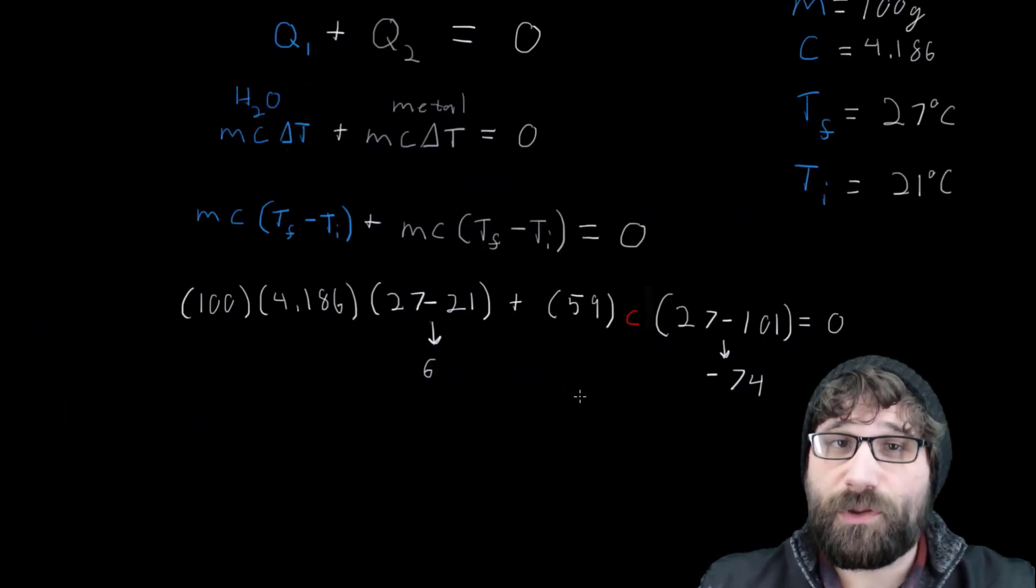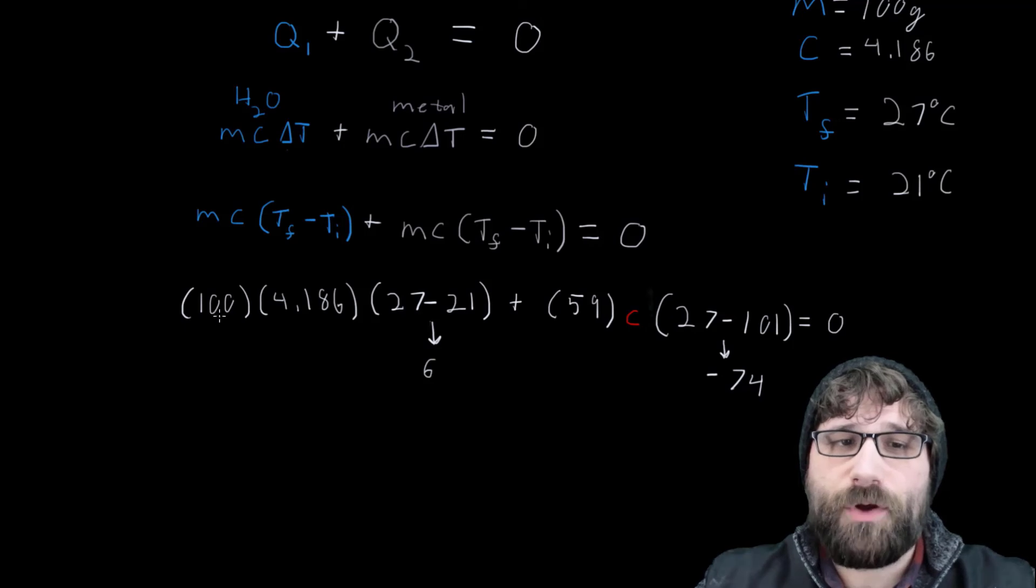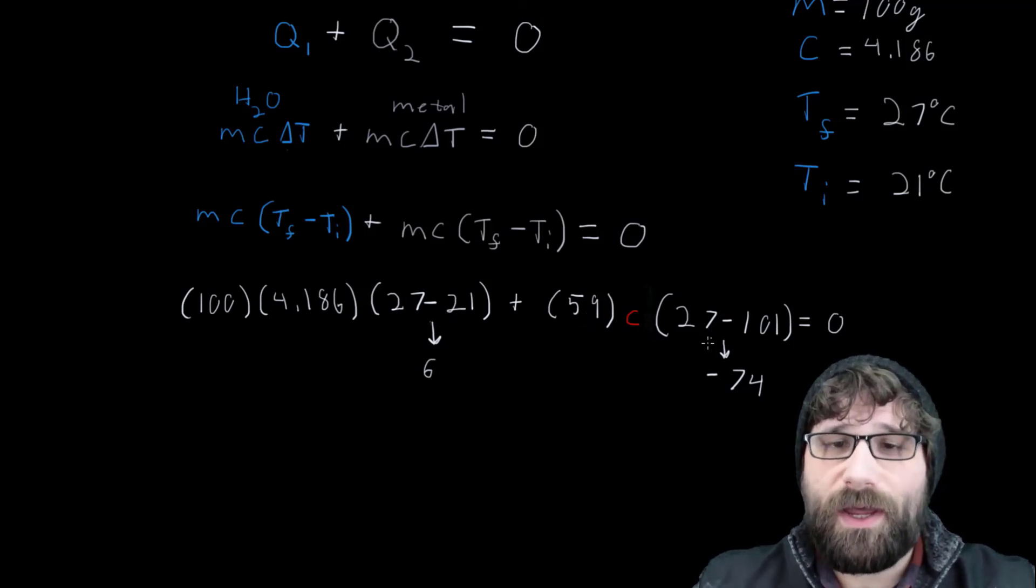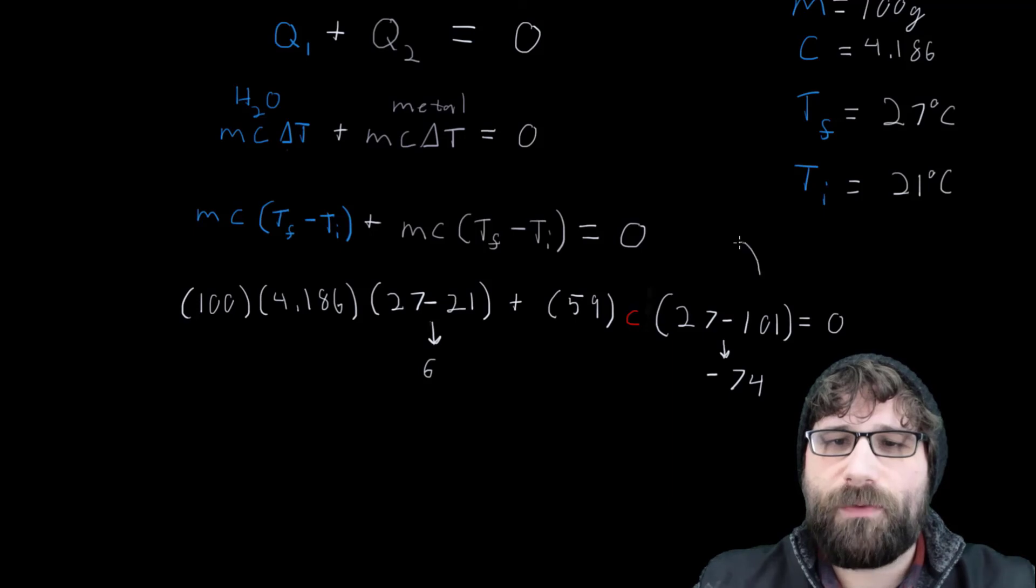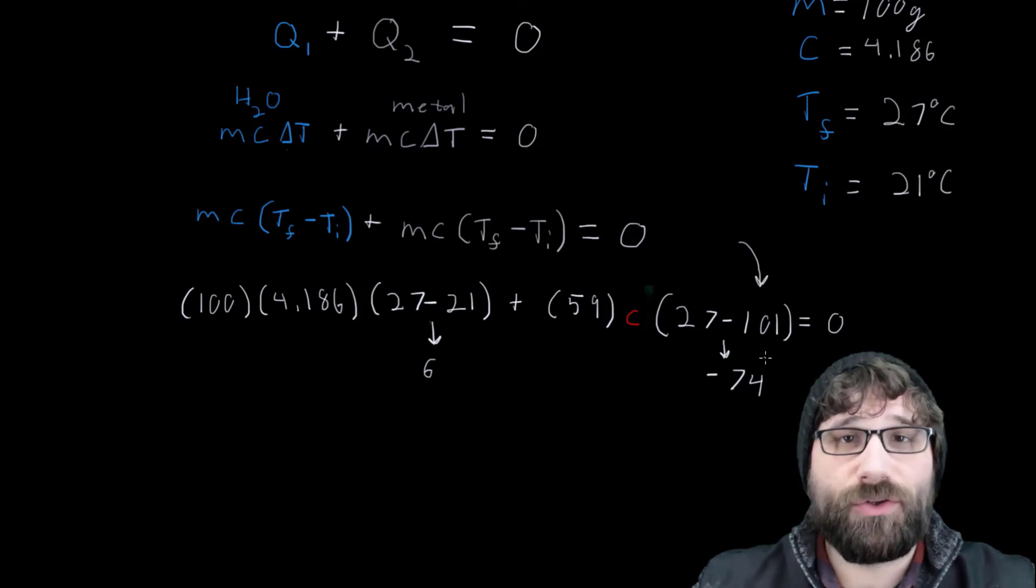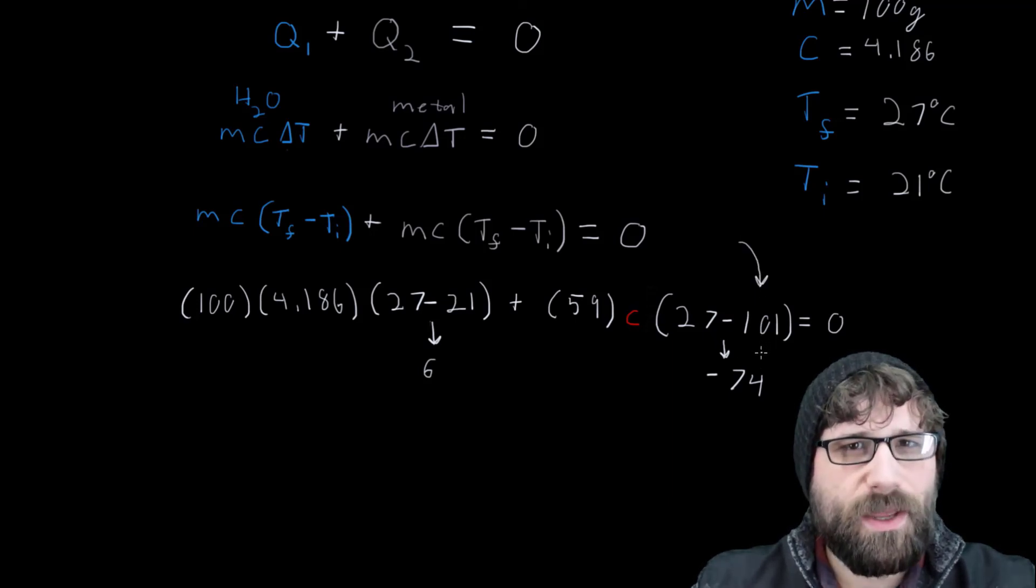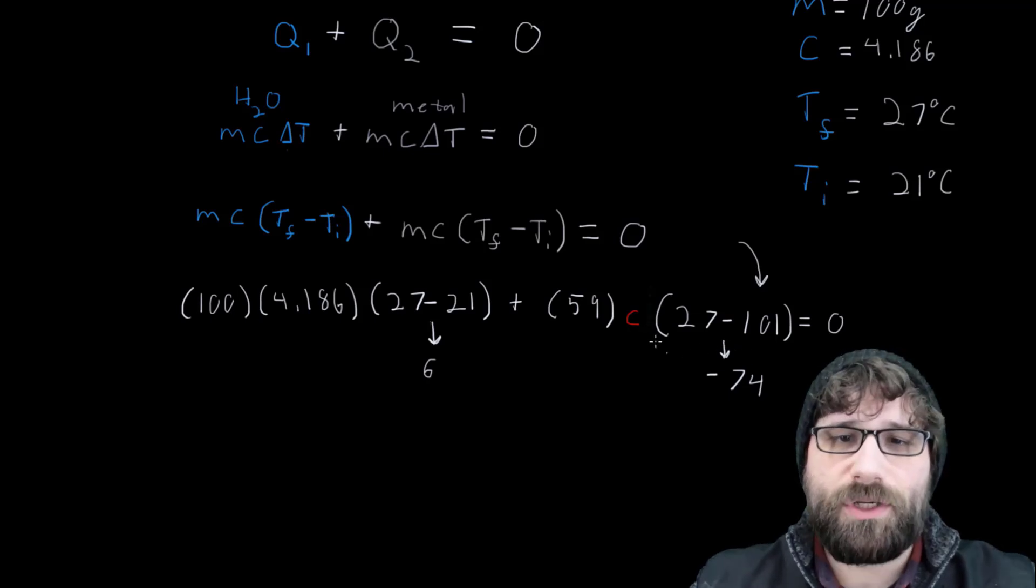Now that I've got all of my values plugged in, I'm just going to multiply my 100, my 4.186, and my difference of 27 and 21, which is 6. And then I've got 59 times the difference of 27 and 101, which is negative 74. It's very important that I remember that 101 was my initial temperature, so I'm subtracting that. My metal was losing energy, so this should be a negative number.